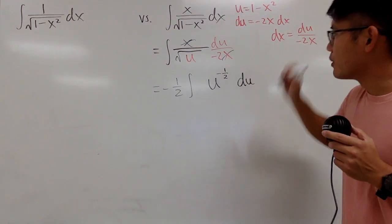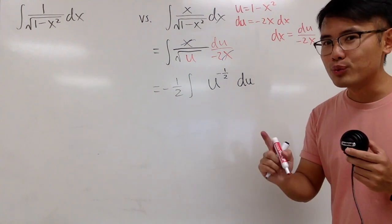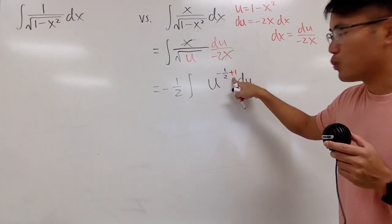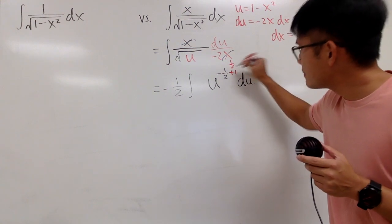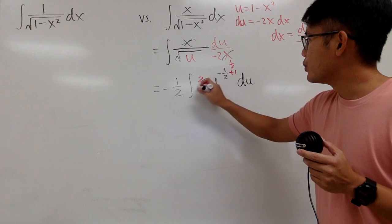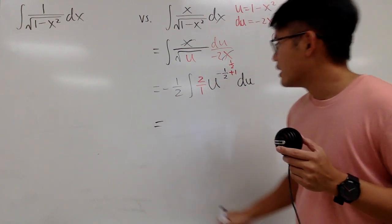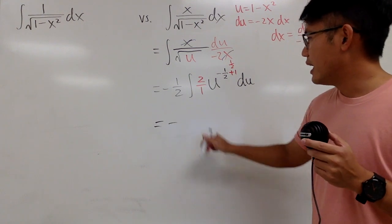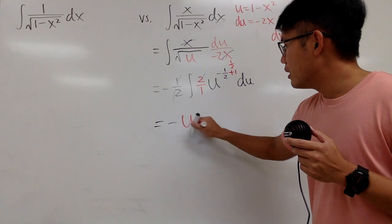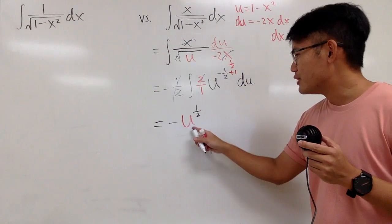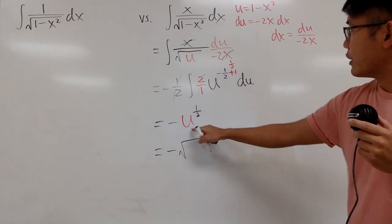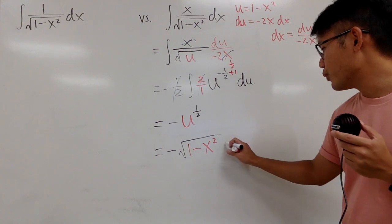We are ready to integrate this by the power rule backwards. I will first add 1 to the exponent — negative 1/2 plus 1 is positive 1/2. We have to divide by this new power, divided by positive 1/2, which is the same as multiplying by 2 over 1. The negative 1/2 and the 2 cancel out, leaving us with u to the 1/2 power. That's it for the integration step. I just plug u back in and write this as negative square root of 1 minus x squared, plus C.